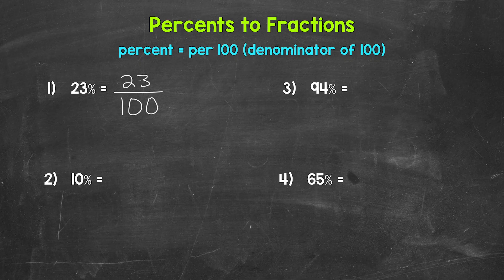Now this fraction cannot be simplified. The only common factor between 23 and 100 is 1, so we are done. Again, 23% equals 23 over 100 as a fraction, 23 hundredths.